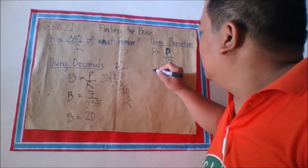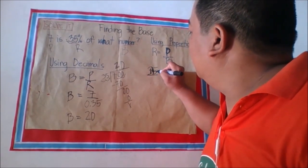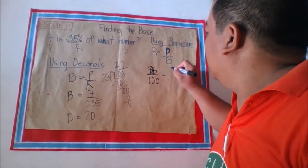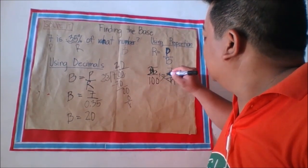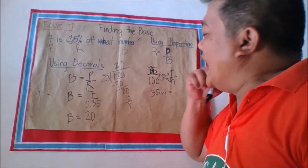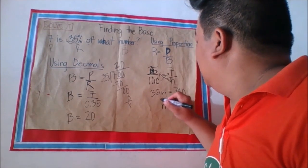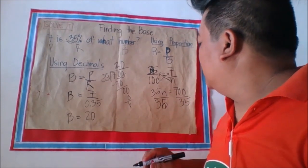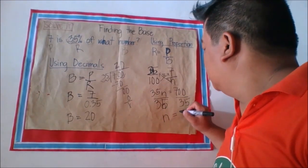Using proportion to find the base: rate is 35 over 100, equal to percentage (7) over base (n, the unknown). Using cross products: n times 35 is 35n, and 7 times 100 is 700. To get the value of n, divide both sides by 35. So 700 divided by 35 equals 20. The base is 20.